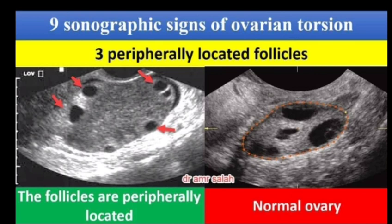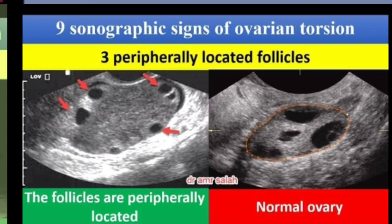Sign number 3: Peripherally located follicles. In the case of a normal ovary, follicles are also found in the mid-region. But in an abnormal condition, you will find follicles are peripherally located, and then we can suspect it is a case of torsion of the ovary.